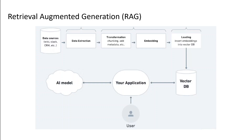If you look at the diagram on your screen, this is the flow. We use RAG to add context to the model. On the top left-hand side, we have numerous datasets — let's suppose these are our company's data. We extract the relevant data which we want to share with the model from these data sources, for example, a few PDF documents or SharePoint folders and such.